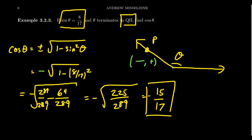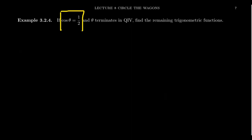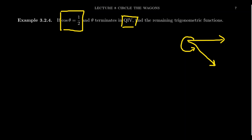Because we knew sine and the quadrant, we were able to compute cosine. And if we can get sine and cosine, then we can actually get all of the trigonometric ratios. Let's try that out. This time, let's suppose that cosine of theta is known, and that the angle terminates in the fourth quadrant. The positive x-axis is here, and our angle spins until we reach the fourth quadrant. We know that cosine equals one half.